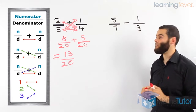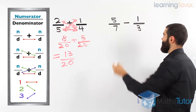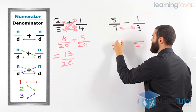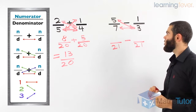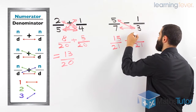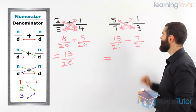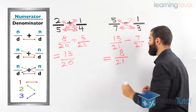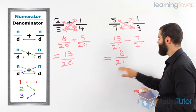Now subtraction — same concept. We can't subtract unless we have common denominators, and here the denominators are different. Following the same process: the first step, as marked by the red arrow, is to multiply the denominators to get a common denominator — three times seven is twenty-one. Then the numerator times the second denominator: five times three is fifteen. And lastly, one times seven is seven. Fifteen take away seven is eight, giving us eight over twenty-one. There is no highest common factor, so that is our final answer.